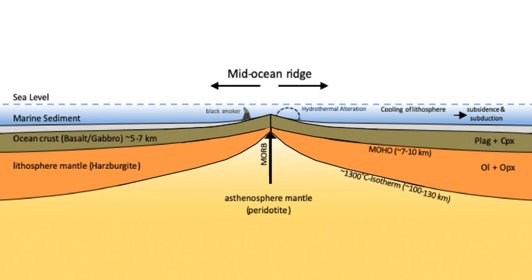The overall shape of ridges results from Pratt isostasy. Close to the ridge axis there is hot, low-density mantle supporting the oceanic crust. As the oceanic plates cool away from the ridge axes, the oceanic mantle lithosphere—the colder, denser part of the mantle that, together with the crust, comprises the oceanic plates—thickens and its density increases. Thus older seafloor is underlain by denser material and is deeper. The width of the ridge is hence a function of spreading rate. Slow ridges like the MAR have spread much less far, showing a narrower profile, than faster ridges like the East Pacific Rise for the same amount of cooling and consequent bathymetric deepening.